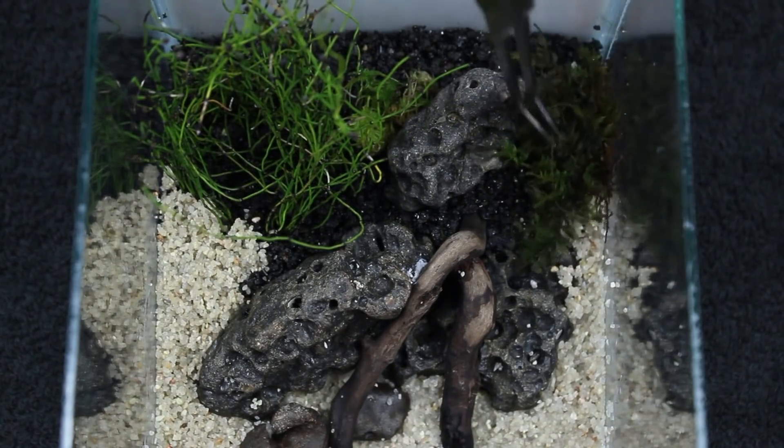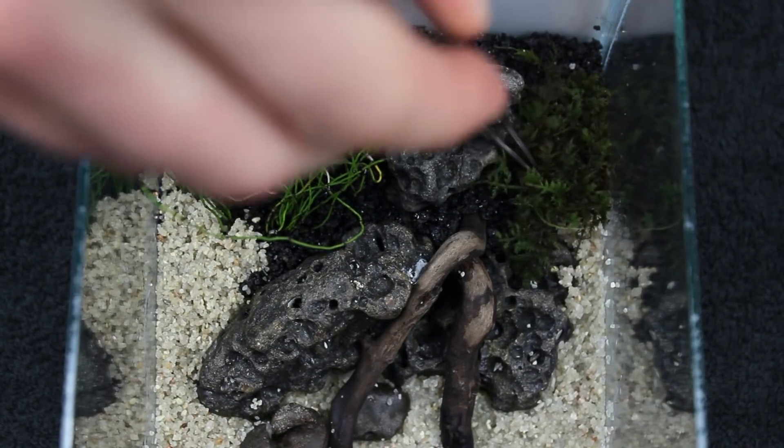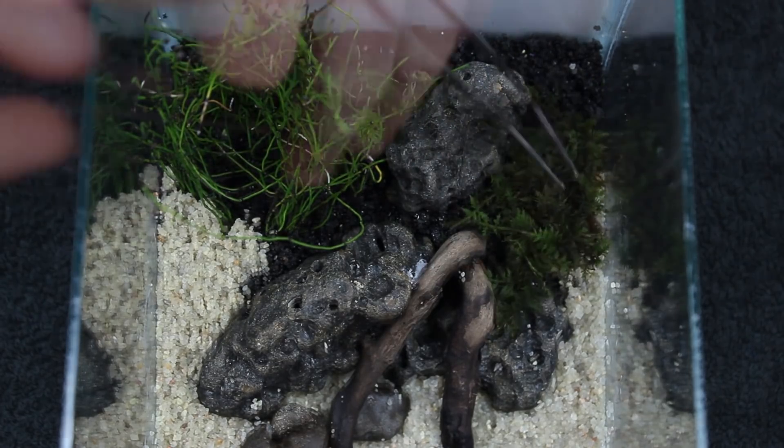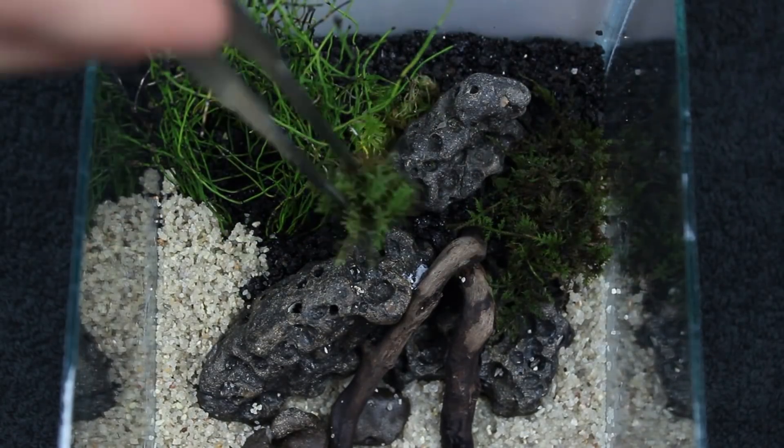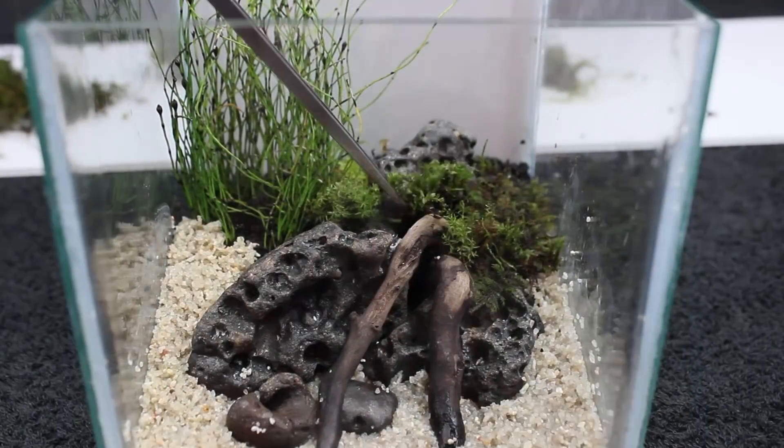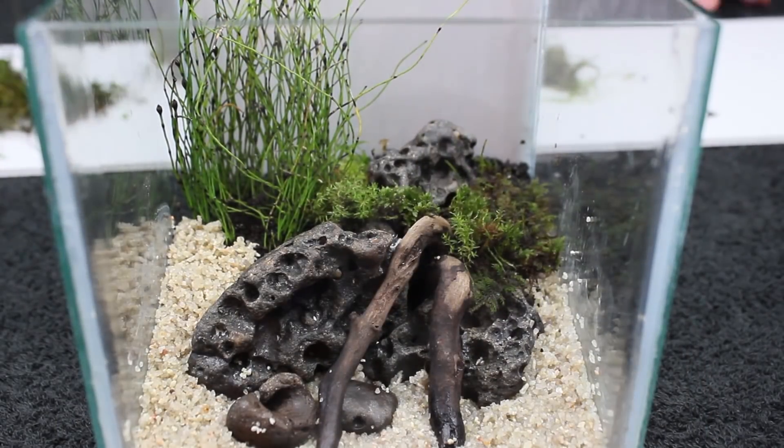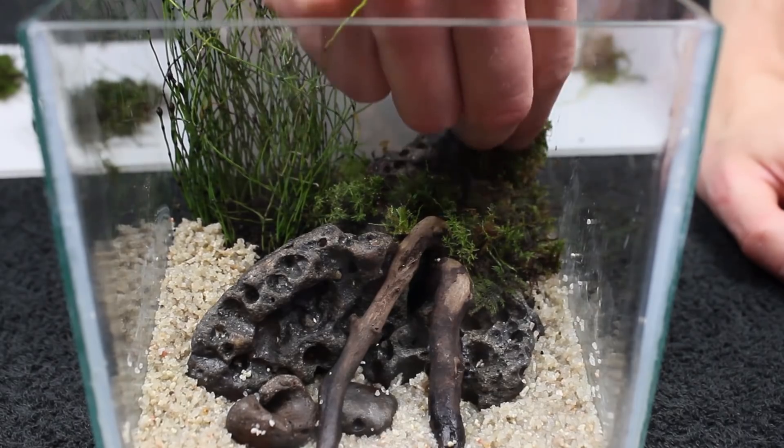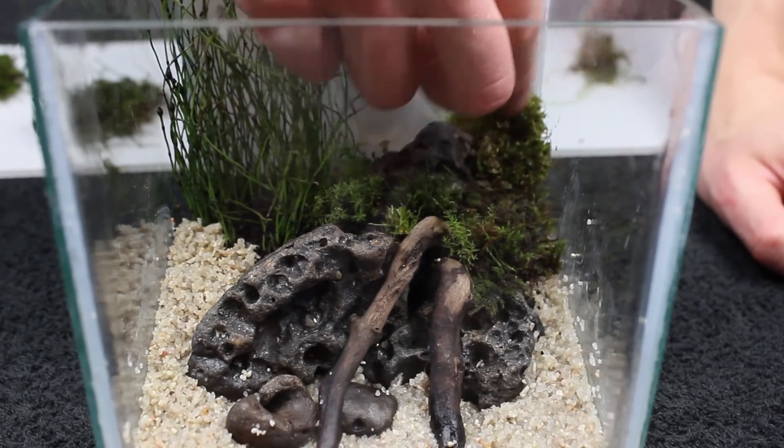A substantial patch of fern moss was then added to the right side. From there I accented with various patches of other mosses that were shown earlier. Then the larger patch of badge moss was added to the back right.